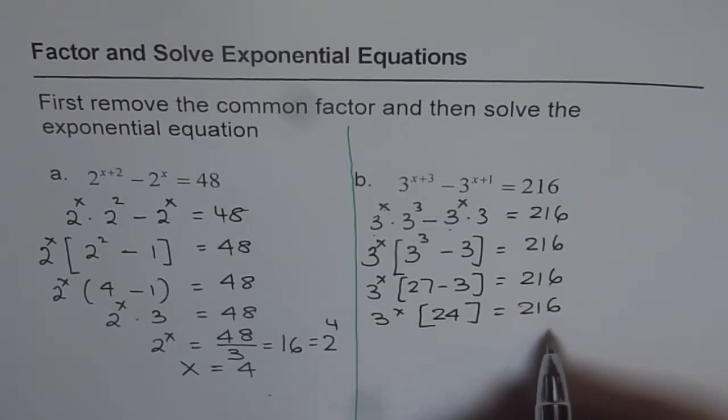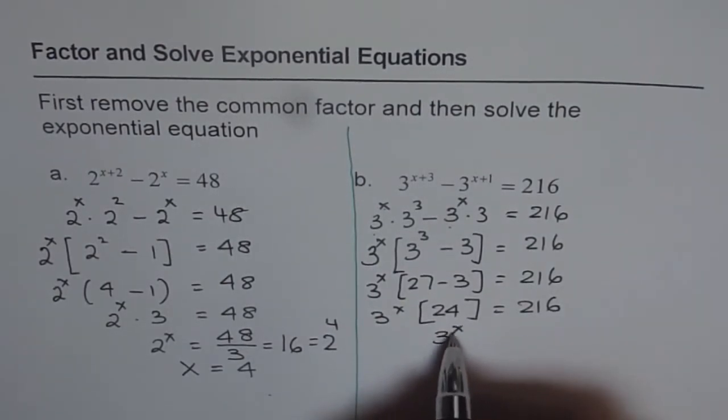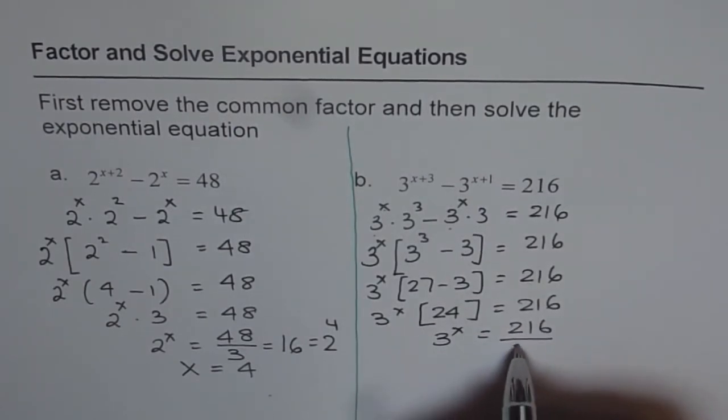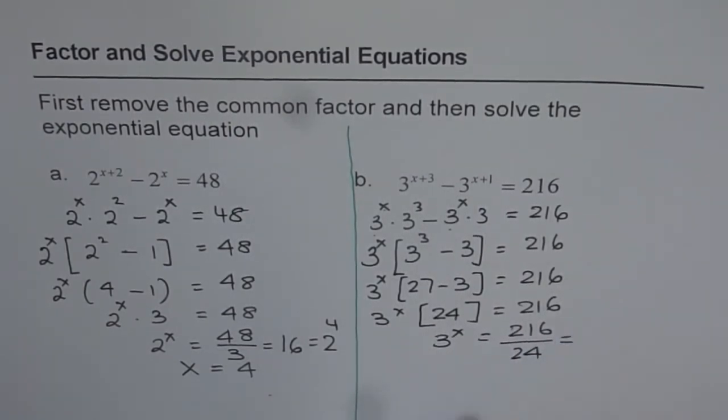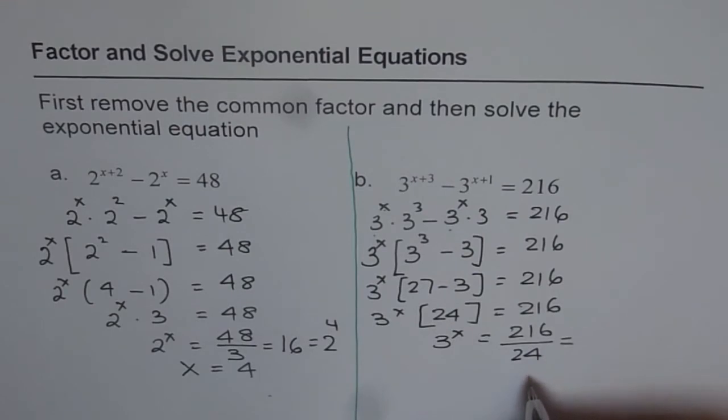And now we can divide by 24. So we get 3 to the power of x equals to 216 divided by 24. So if you divide 216 by 24, you will get 9.